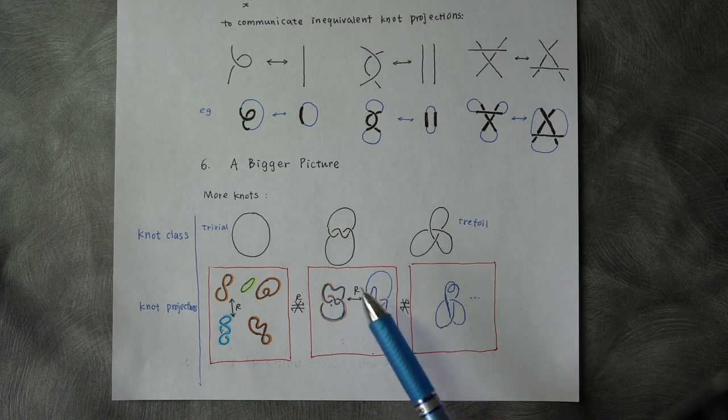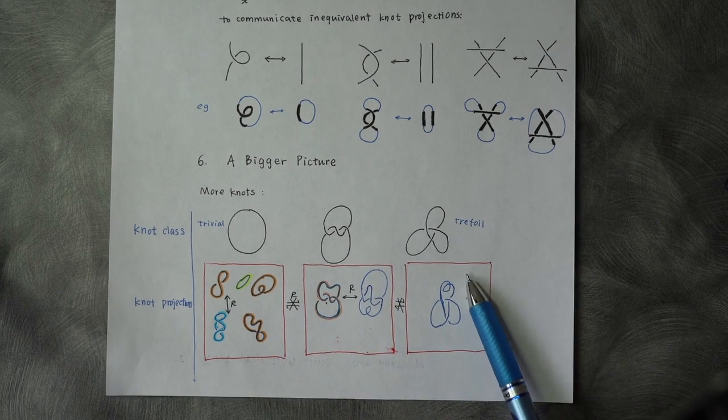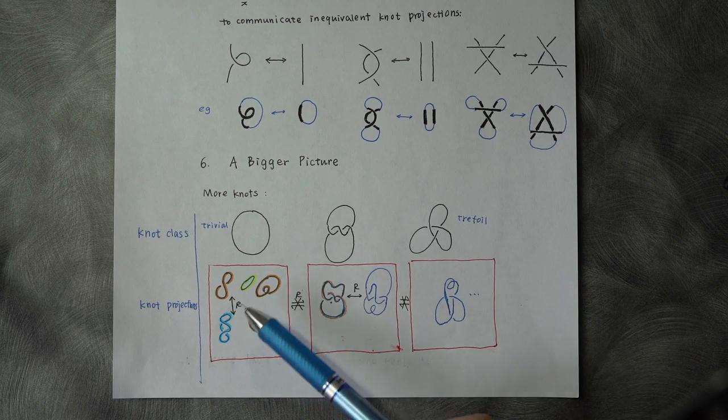We have three different knot classes here: trivial knot, some knot, and a trefoil. A knot class can have several inequivalent knot projection classes,